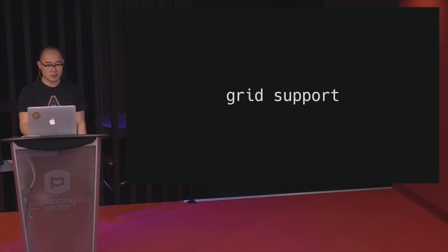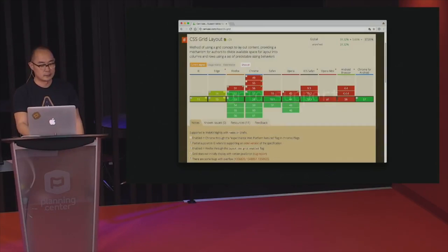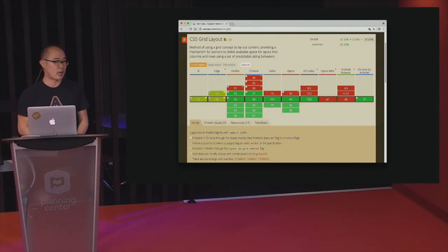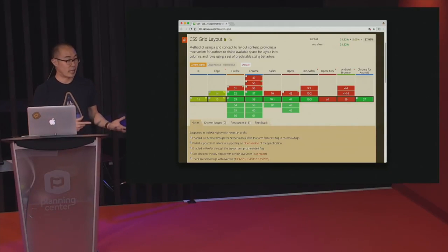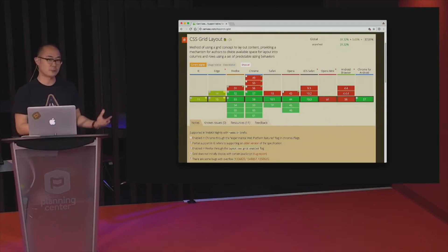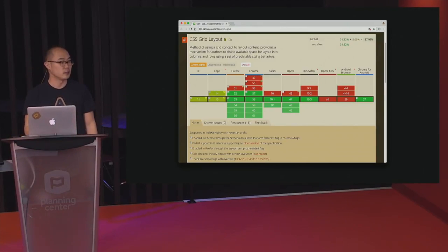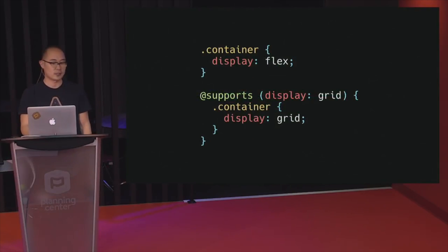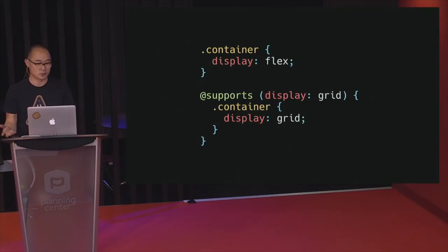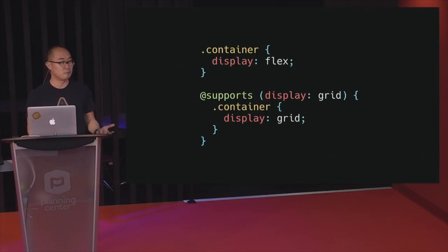So what does Grid browser support look like? It's actually surprisingly pretty good. This screenshot from caniuse.com shows partial support for IE and Edge. Interestingly, the spec for Grid came from Microsoft and has been in development for over five years. Because the spec has evolved it's fallen a bit behind, but Edge will catch up. For progressive enhancement, you can use Flexbox as the baseline — since it's more widely supported — and then use the @supports rule in CSS to say: if grid is supported, take this container and display it as grid instead of flexbox.